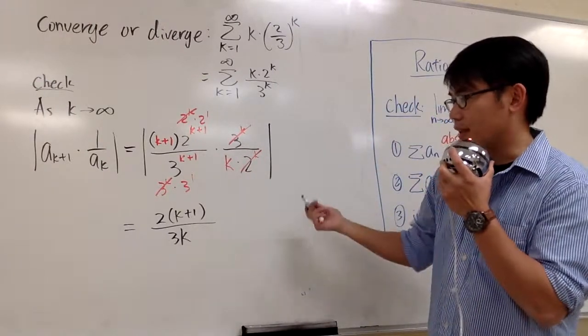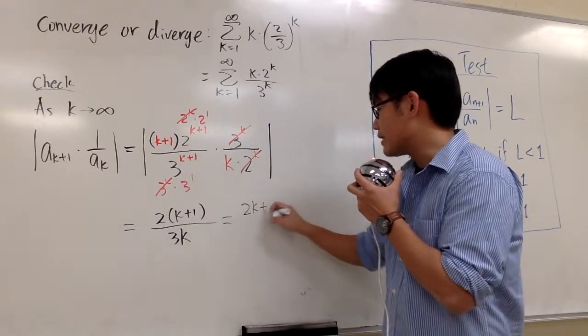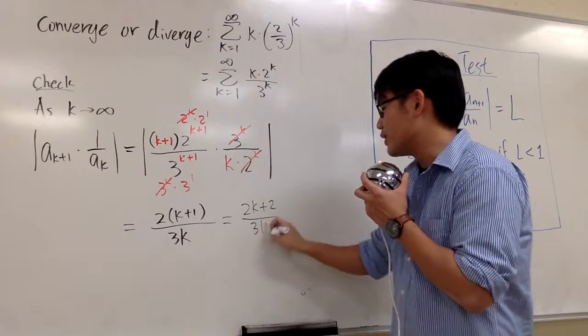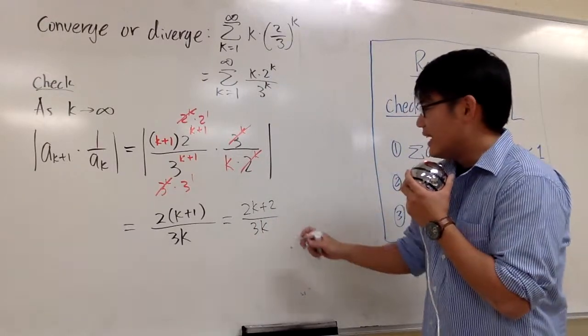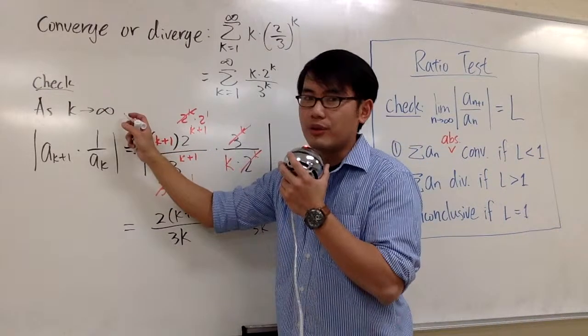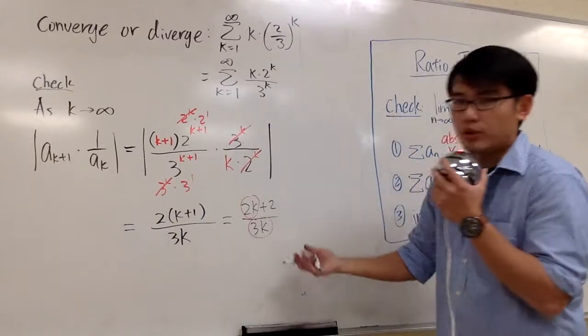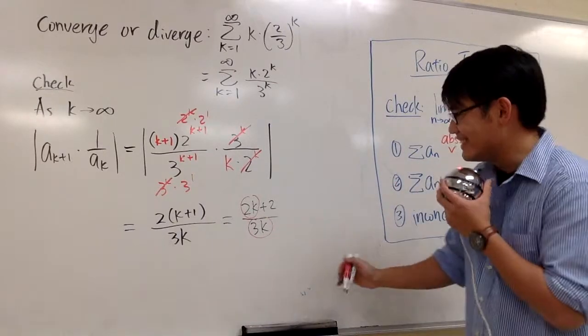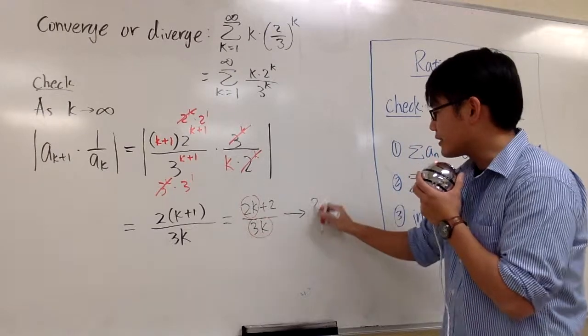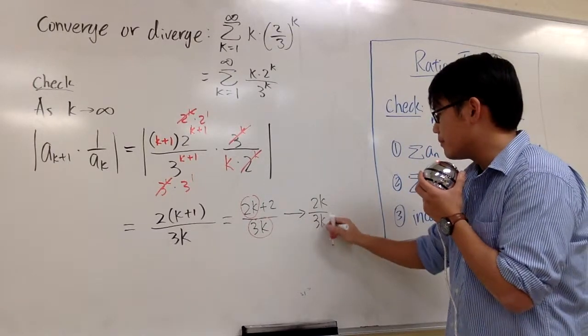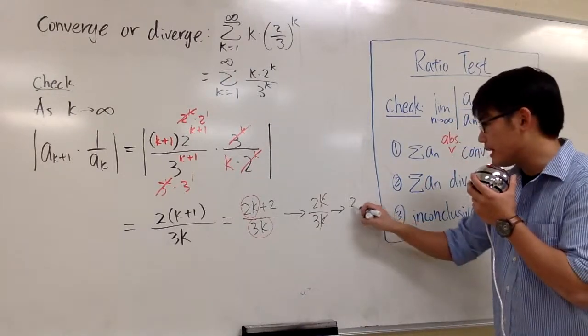And now we can take some limits. To take the limit as k goes to infinity, on the numerator we just care about the 2k, on the denominator we just worry about the 3k. This approaches to 2k on the top over 3k on the bottom. Well, of course, this will approach to 2 over 3. That's the limit.